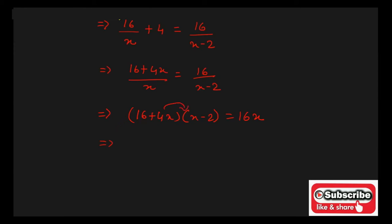Now, multiply the two terms in the LHS. You will be getting 16X minus 32 plus 4X square minus 8X is equal to 16X.